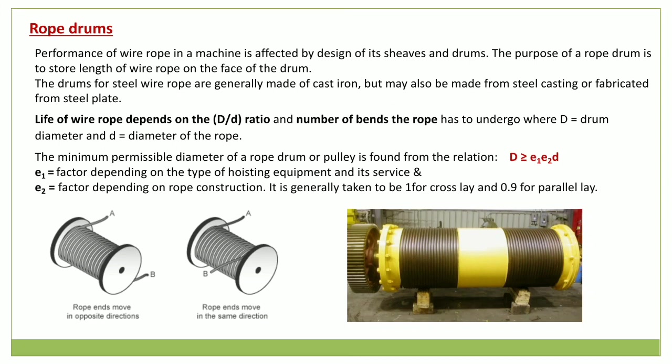The life of the wire rope also depends on the number of bends in the rope. The minimum permissible diameter for a rope drum is given by the relation: D ≥ E₁ × E₂ × d, where D is the drum diameter, d is the diameter of the rope, and E₁ and E₂ are factors depending on the type of hoisting equipment and the rope construction. E₂ is generally taken as 1 for cross lay and 0.9 for parallel lay.